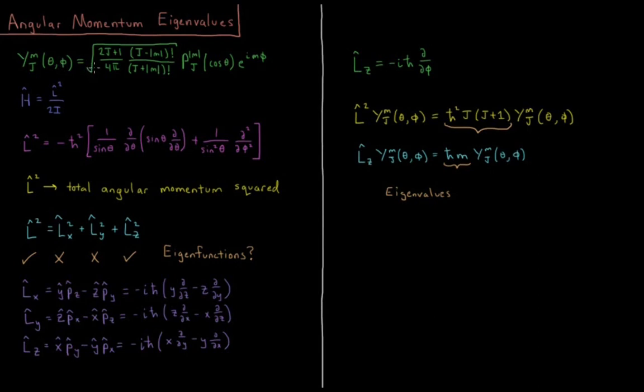Those equal a normalization constant, square root of 2j plus 1 over 4 pi, j minus absolute value of m factorial over j plus absolute value of m factorial, times the associated Legendre polynomial pj absolute value of m of cosine theta times the complex exponential e to the i m phi.